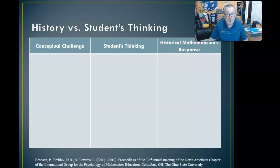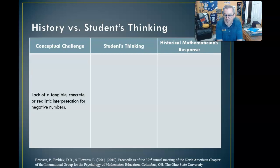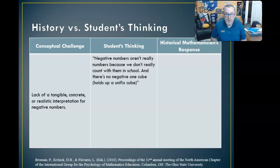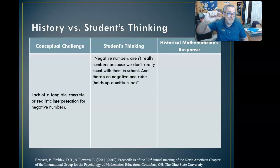So that's the first conceptual challenge. There are a couple more. A lack of a tangible, concrete, or realistic interpretation for negative numbers. With kids in elementary school, we can count things — M&Ms, gummy bears — and it's a tangible, concrete, realistic quantity to count. How do you have that with negative numbers? How do you have less than 0? A student in this study says: 'Negative numbers aren't really numbers because we don't really count with them in school, and there's no negative 1 cube.' They have unifix cubes — interlocking cubes — and the student holds one up and says, 'That's 1. There's no cube that represents negative 1.' That's a challenge.